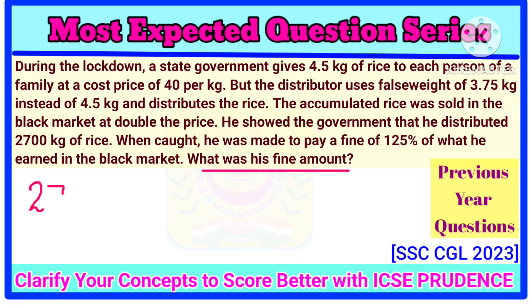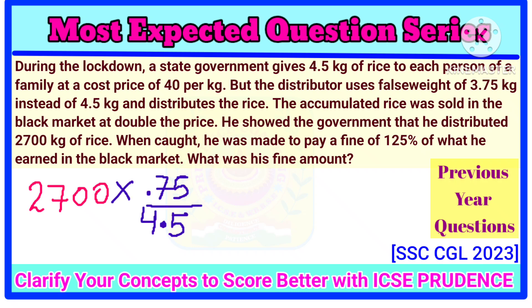The dishonest distributor showed that he distributed 2,700 kg of rice. Since the distributor is using false weight, he is making a profit. The actual weight was 4.5 kg but he used 3.75 kg. Due to this false weight, he is making a profit of 4.5 minus 3.75, that is 0.75 kg on every 4.5 kg of rice. So on 2,700 kg of rice, he will make a profit of 2,700 divided by 4.5, multiplied by 0.75 kg.